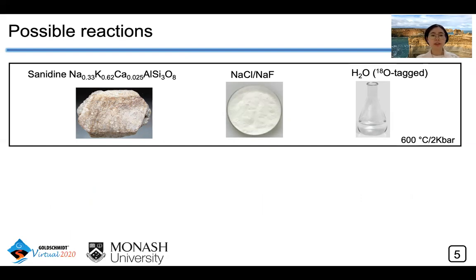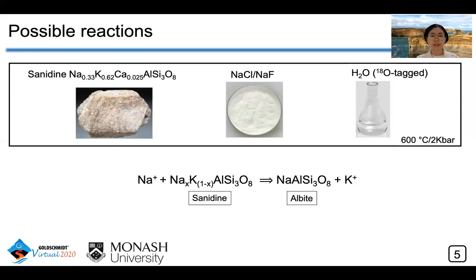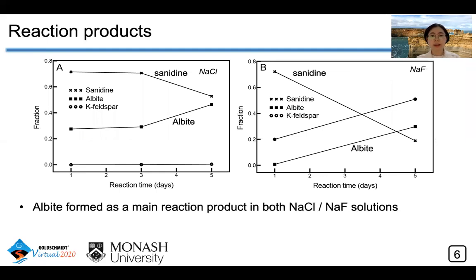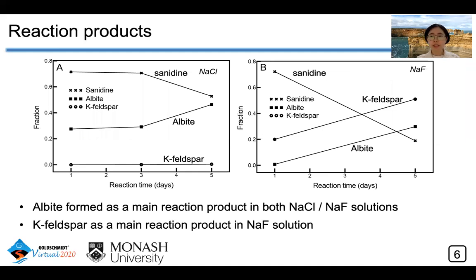Since chlorine and fluorine are not component elements in feldspar, the expected reaction is that sodium from solution would replace potassium in sanidine to form albite, which has been observed before. However, our research shows some really interesting results. Albite formed as a main reaction product in both sodium-chloride and sodium-fluoride solutions, but a new K-feldspar phase also formed as a main reaction product in the sodium-fluoride solution.